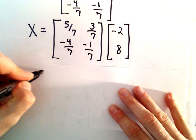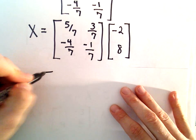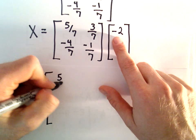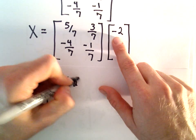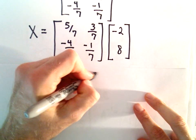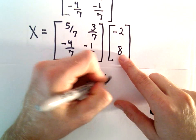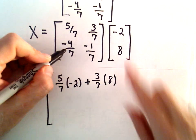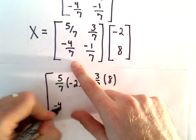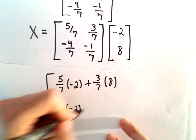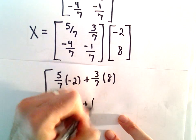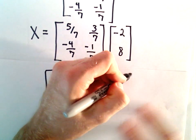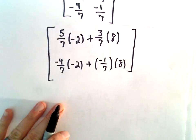Okay, so when we simplify here, we'll have 5 over 7 times negative 2, and then we'll add to that 3 over 7 times positive 8. That's going to be the first entry in the first row. And then we'll take negative 4 over 7, multiply that by negative 2, and add to that the product of negative 1 over 7 multiplied by 8.